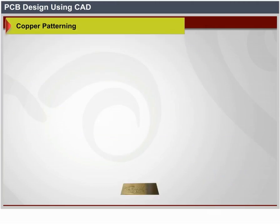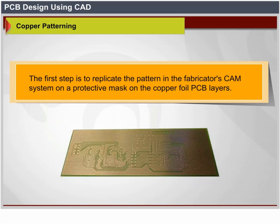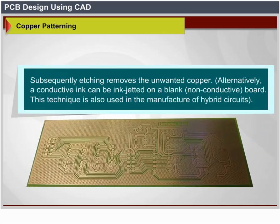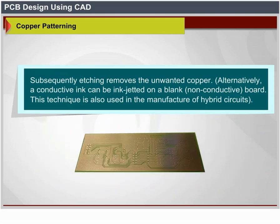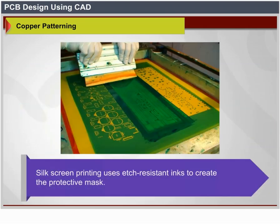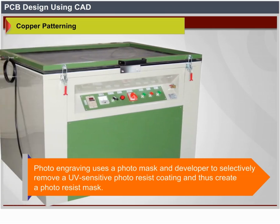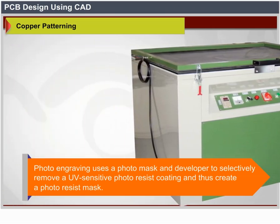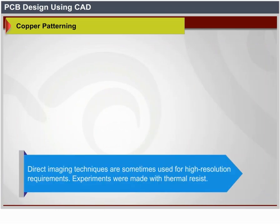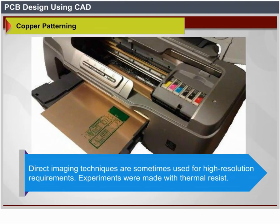Copper patterning: the first step is to replicate the pattern in the fabricator's CAM system on a protective mask on the copper foil PCB layers; subsequent etching removes the unwanted copper. Alternatively, a conductive ink can be inkjetted on a blank non-conductor board. Silk screen printing uses etch-resistant inks to create the protective mask. Photo engraving uses a photo mask and developer to selectively remove a UV-sensitive photo-resist coating, creating a photo-resist mask. Direct imaging techniques are sometimes used for high-resolution requirements.